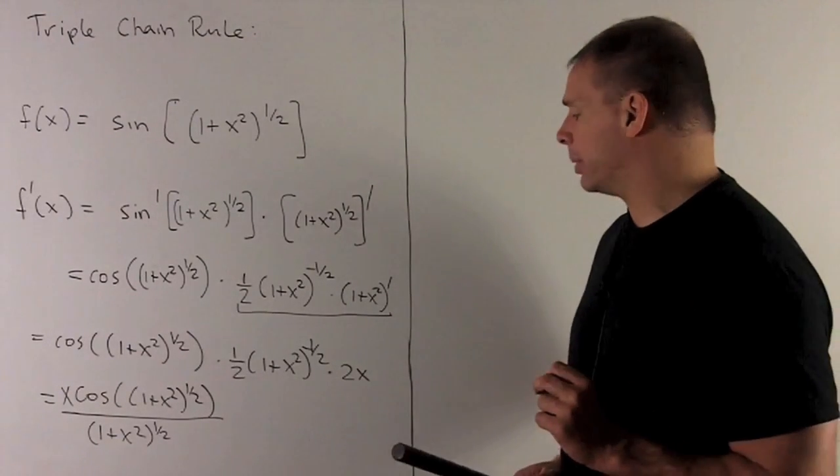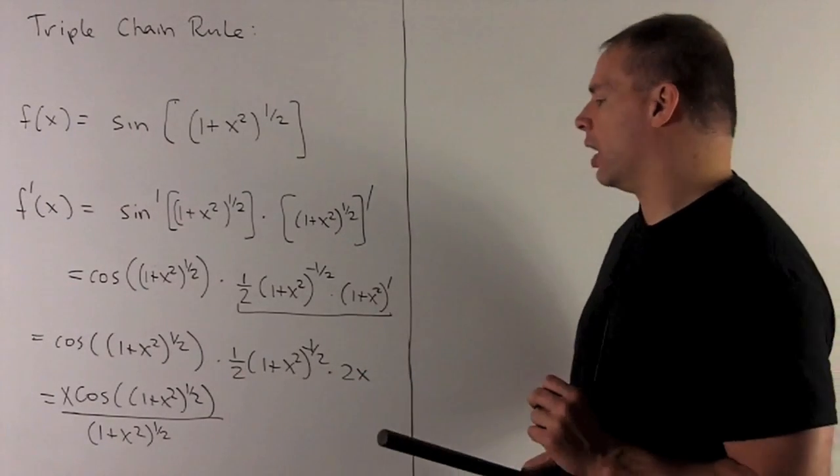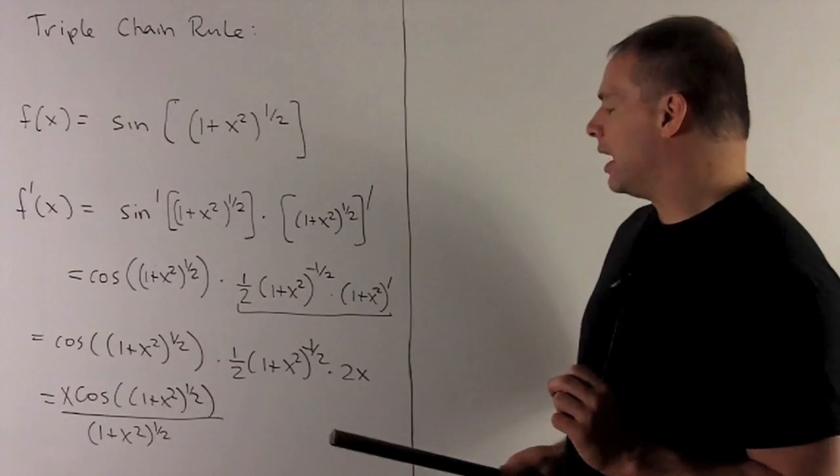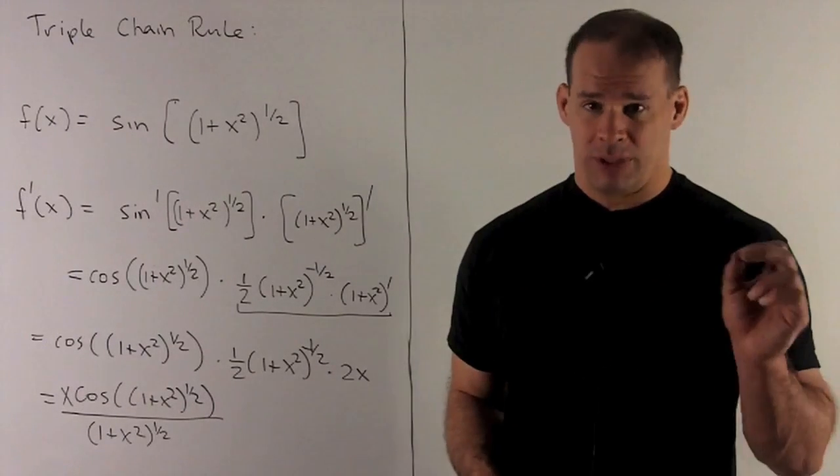So, now, all I have to do is clean up. So, the 2's will go away. I can put the x out in front for the cosine. And then, having this minus 1 half here is just saying, keep it a 1 half,